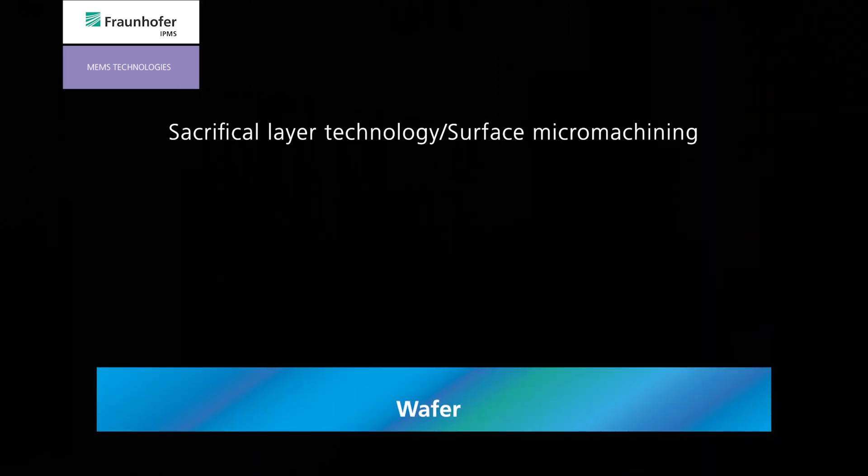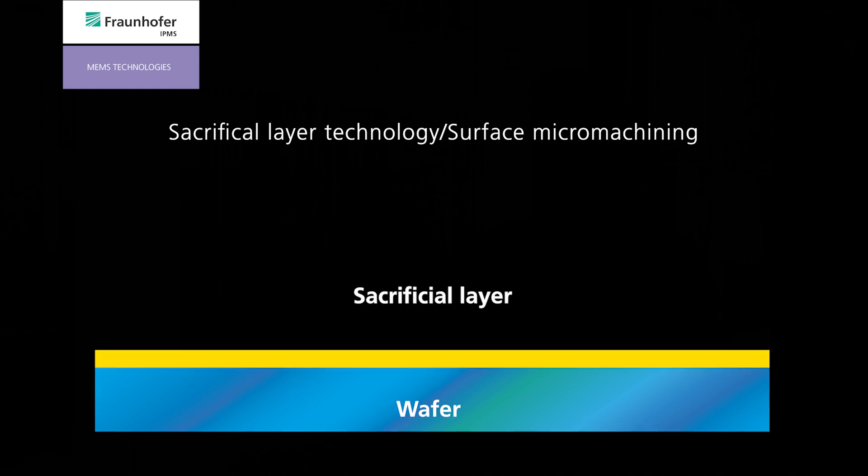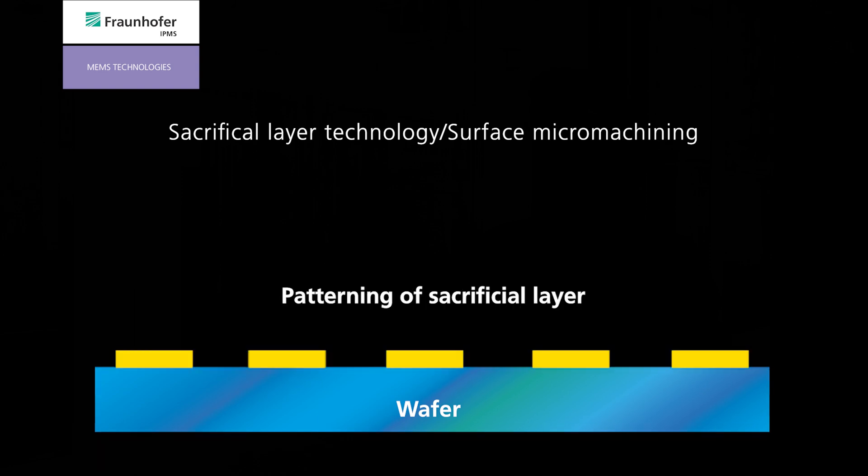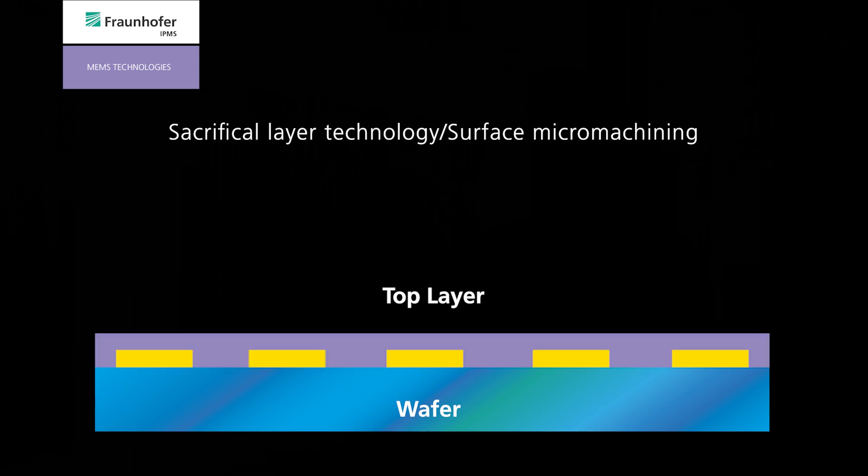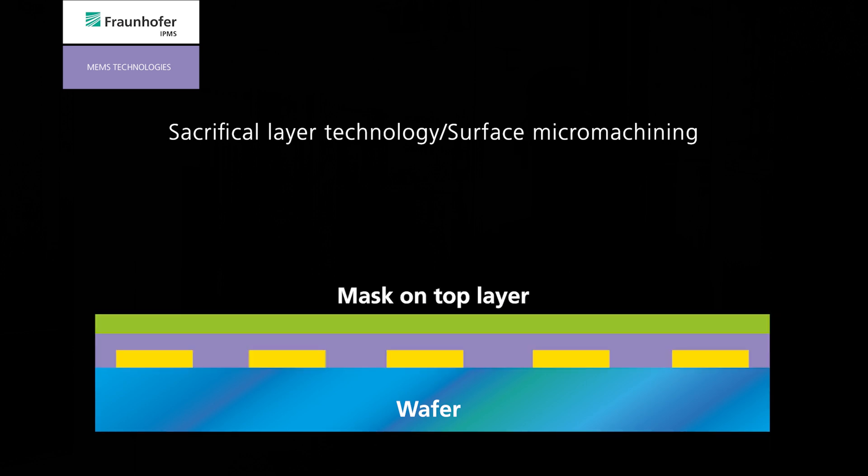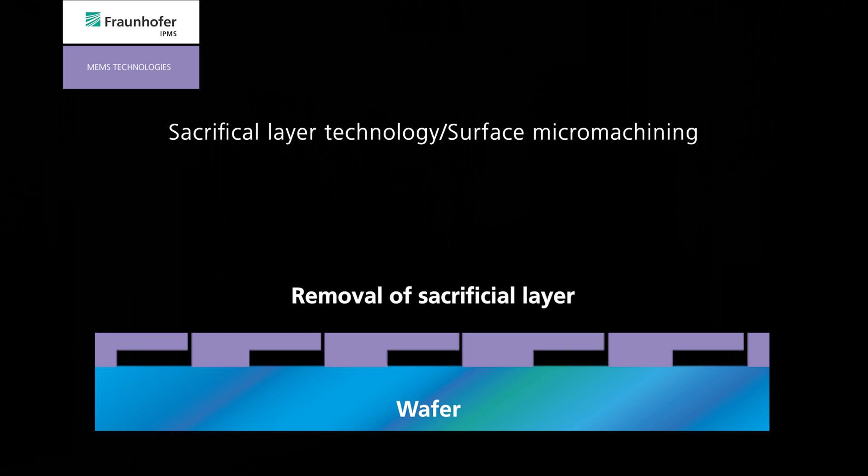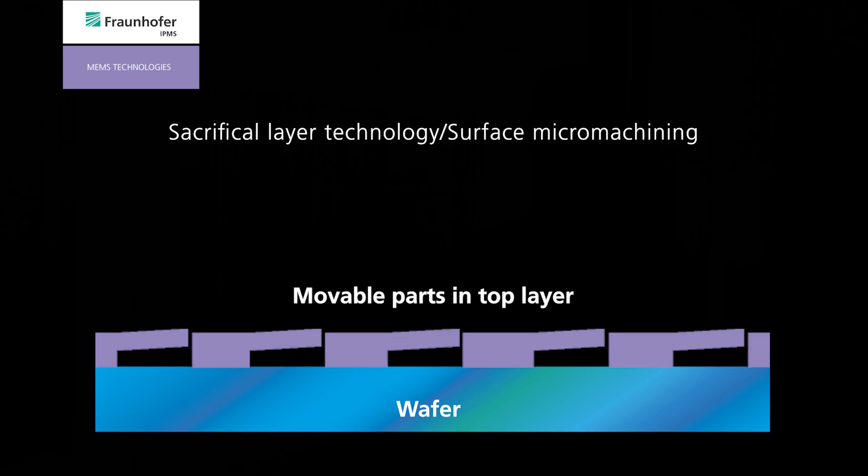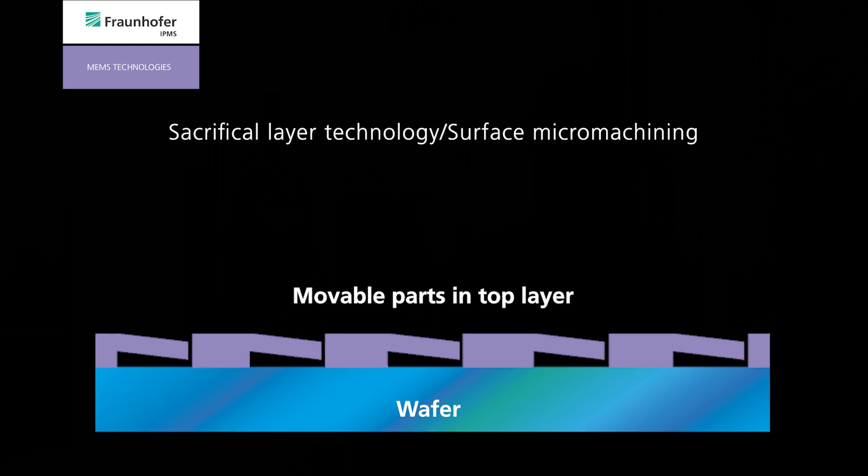This technology platform provides four different technology approaches. The first approach is sacrificial layer technology or surface micromachining. This means you have a sacrificial layer on top of the wafer or in between the multiple stack, which gets released at the end of the process with a gas phase etching. You get with this process a cavity or a hole in your wafer to get movable parts working.